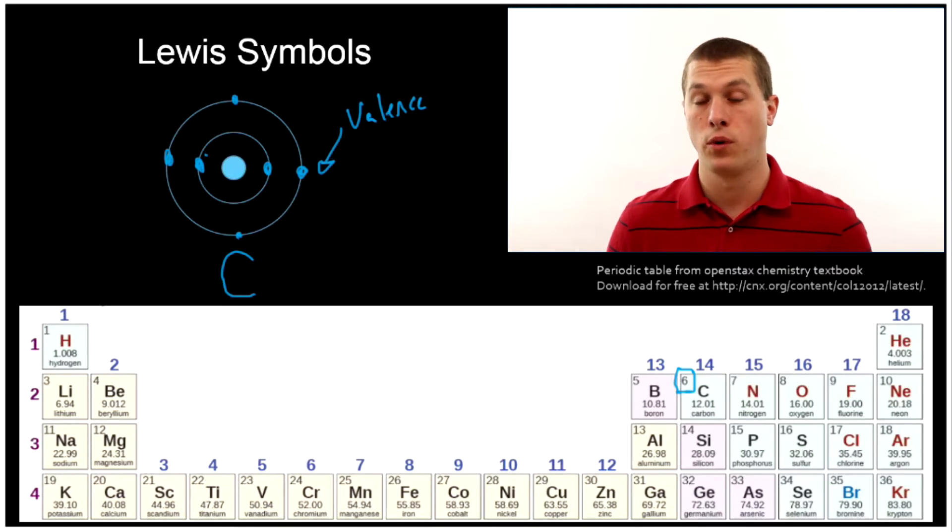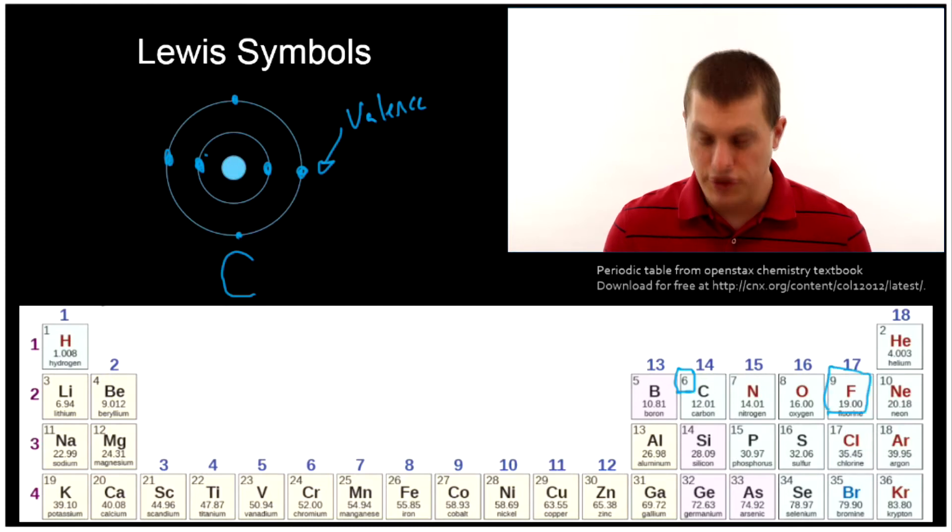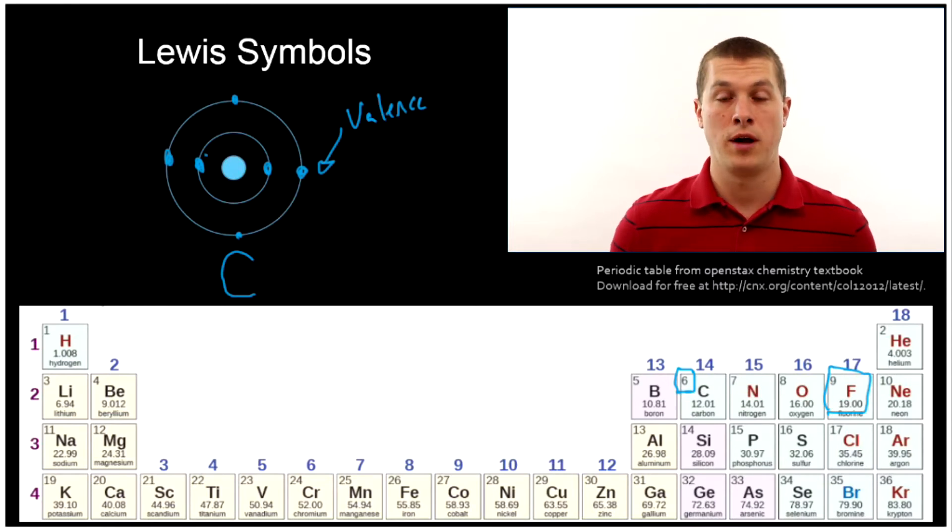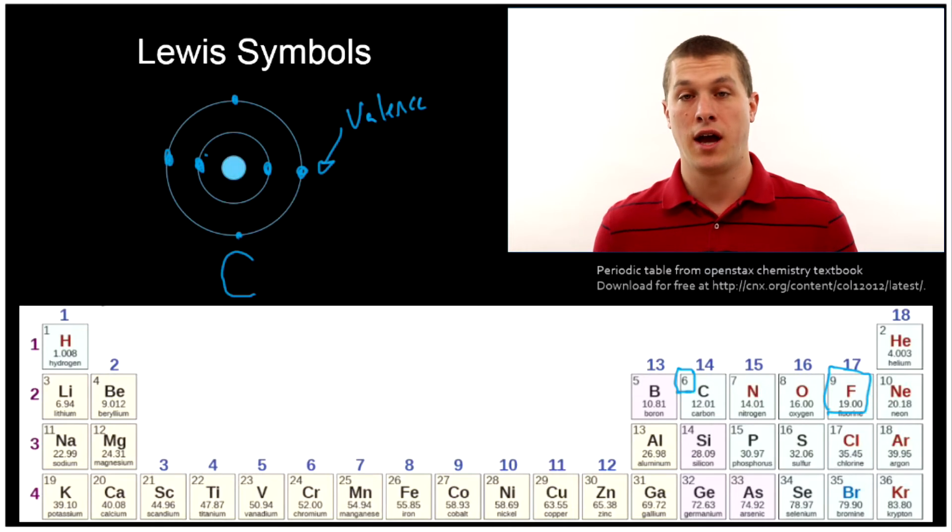For example carbon has four valence electrons. To get an octet it needs four more and so carbon tends to form four covalent bonds, each one giving it an extra electron and that's why carbon forms four bonds. On the other hand if you take an atom like fluorine it turns out to have seven valence electrons it'll tend to gain one extra electron to give it an octet and form a negative one ion. So we can understand both why carbon wants to have four bonds and why fluorine becomes a negative one ion because we thought about the number of valence electrons.